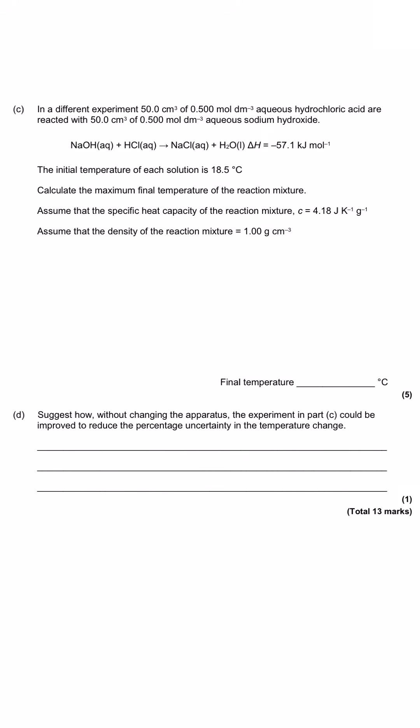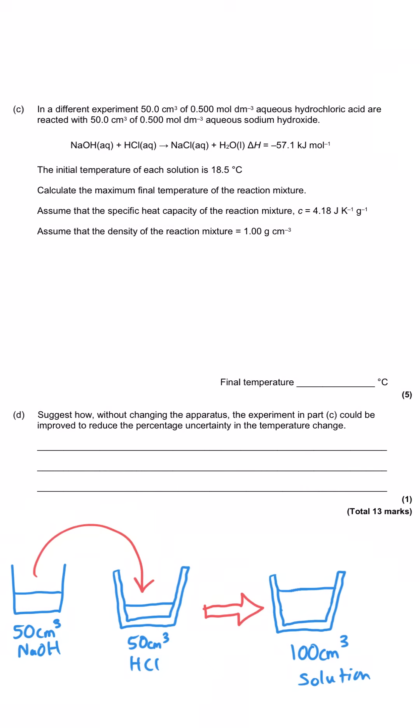The question moves on to a different type of experiment. This time we're not adding a solid to a solution. This time we're adding two solutions together. That has a key significance where we are going to be working with two volumes that are combining to give an overall volume of 50 plus 50. That means 100 centimeters cubed of solution will be in our polystyrene cup. What that means is when we're working out the temperature change or the energy transferred to the solution, it's to the whole solution, to that 100 cm³ of solution or that 100 grams of solution as it turns out. They've asked us to calculate the maximum final temperature of the reaction mixture, given that it has started at 18.5 degrees C. We can see from the question that it is an exothermic reaction because of the negative enthalpy change. That means that the temperature is going up. So we're expecting a final temperature to be greater than 18.5 degrees C.